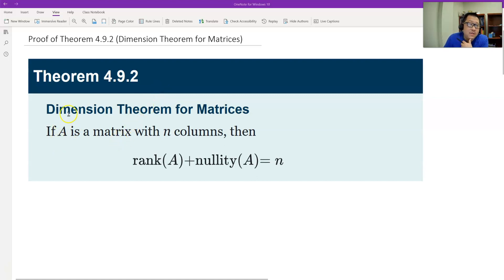This is the important result. Suppose we give you a matrix that has n columns, and then no matter the row, we have these two results. The rank of A plus the nullity of A equals the number of columns. Let's see why.